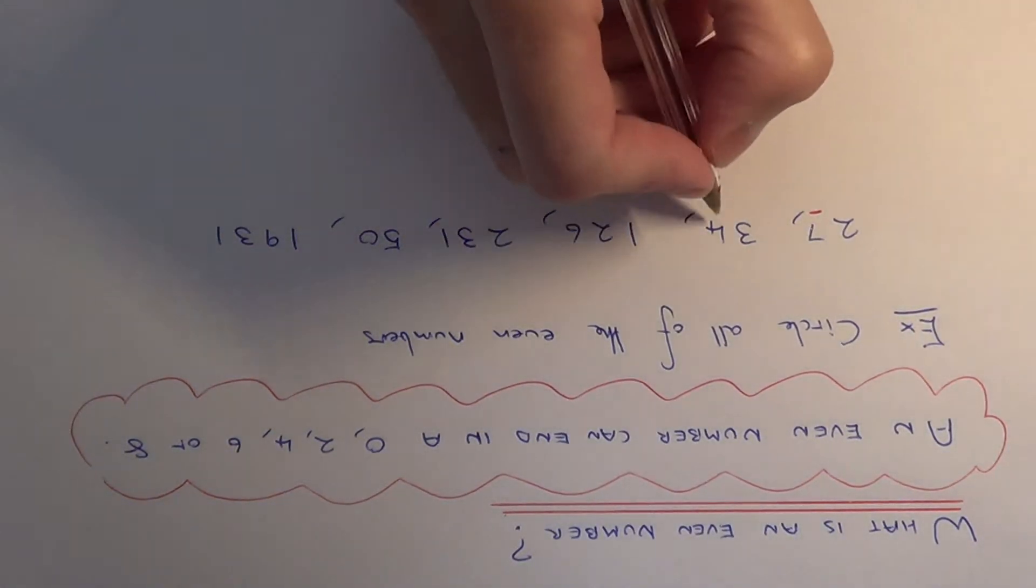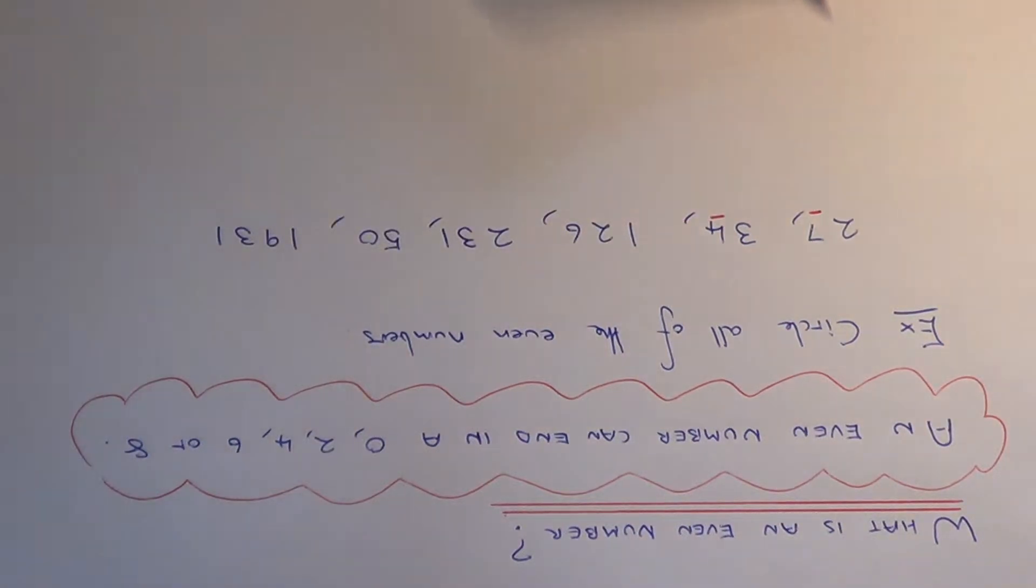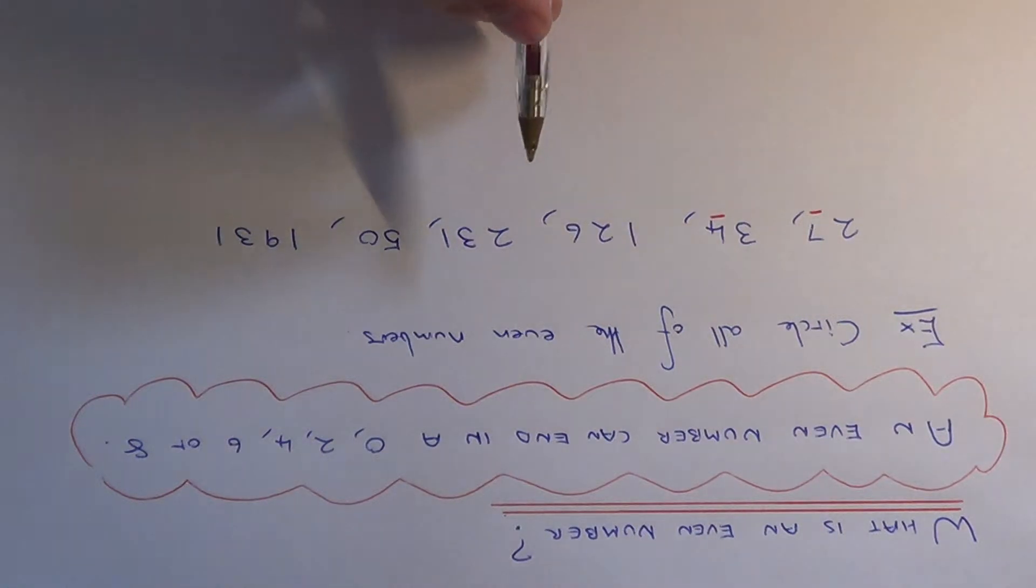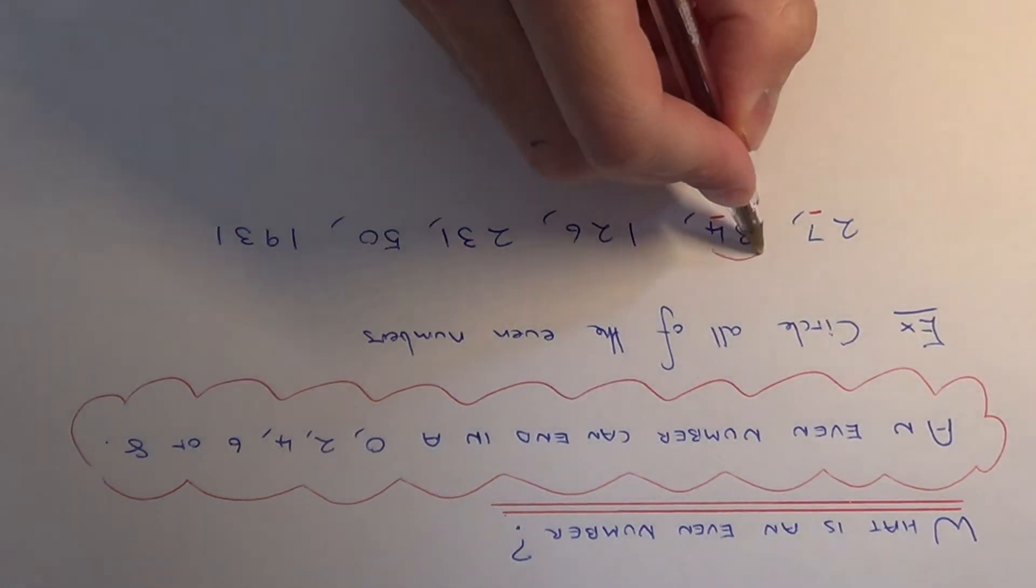Our next number is 34. So again, look at the last digit. The last digit is a 4, so it is going to be an even number. So we can circle this one.